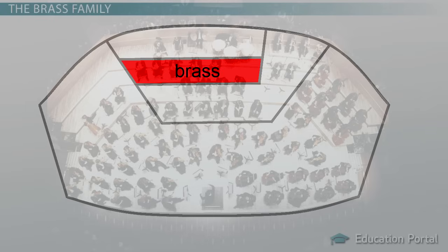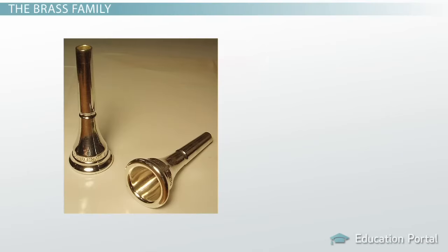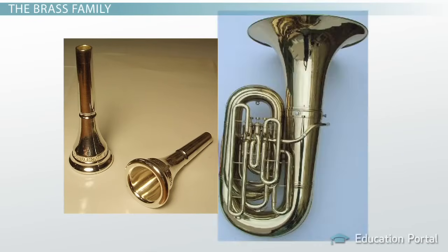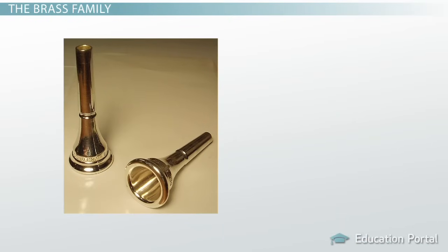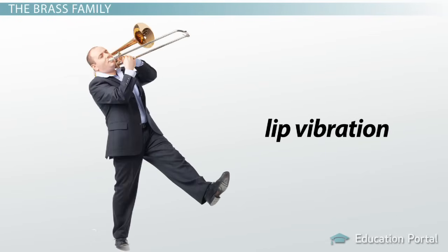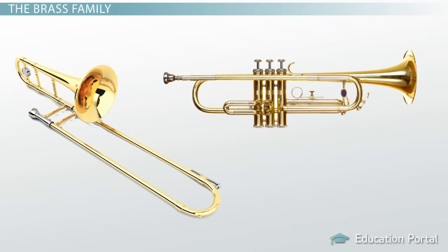The brass family gets its name from the shiny material its instruments are made from. All brass instruments use the player's lip vibration and air to make sound. The player's lips vibrate rapidly against a metal mouthpiece, and the buzzing sound produced bounces and echoes through the instrument to make a tone. Unlike woodwind instruments, brass instruments have very few keys — in fact, the trombone doesn't have any keys at all; it uses a slide.